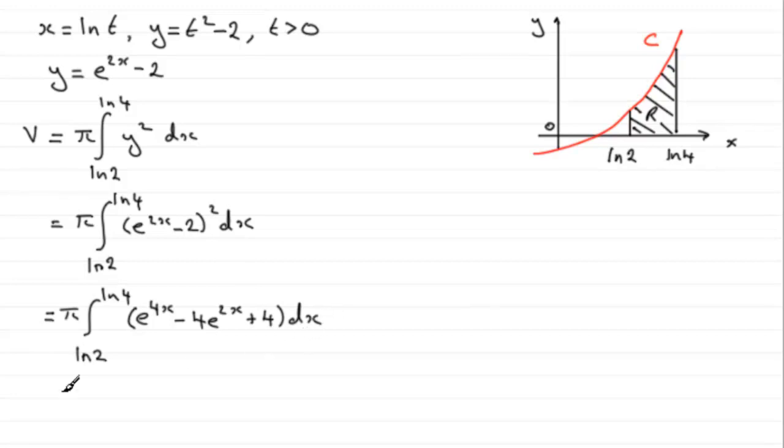Okay now if we integrate each of these terms we're going to have pi times, then if we integrate e to the 4x we get e to the 4x over 4. Integrate minus 4 e to the 2x, that's going to be minus 4 e to the 2x all over 2, and we can cancel out at this stage, we could cancel that 2 into that 4 and that would be a 2 there. And then for the last term, integral of 4 with respect to x is going to be 4x. So we've got our limits now going from the natural log of 2 to the natural log of 4.